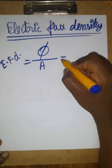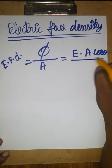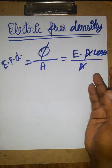See, flux - we know E, electric field times cos theta. Divided by area, the area will get cancelled.